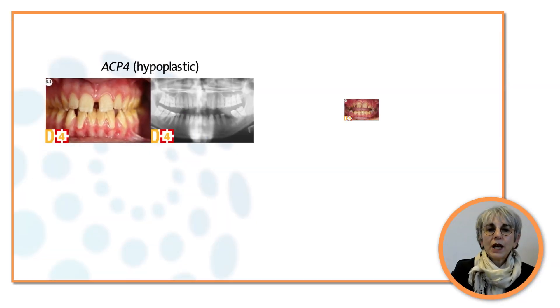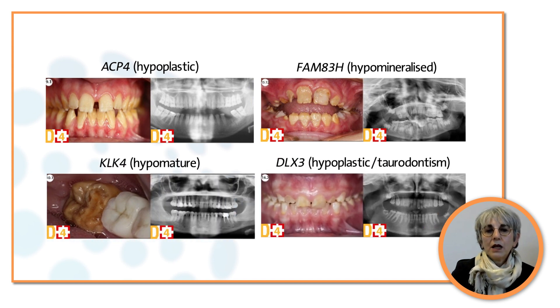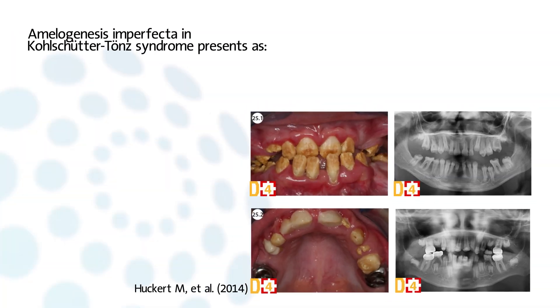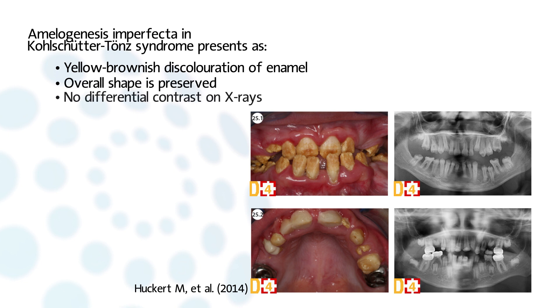Typical phenotype-genotype correlations observed in patients presenting with isolated amelogenesis imperfecta are seen on intraoral pictures and radiographs. The syndromic condition named Kolschütter-Tünz syndrome is due to mutations in ROGDI genes. It combines early-onset epilepsy with hypomaturation amelogenesis imperfecta. Individuals present a yellow-brownish discoloration of enamel affecting both primary and permanent dentitions. The overall shape of teeth is preserved, and there is no differential contrast on X-rays between enamel and dentine.